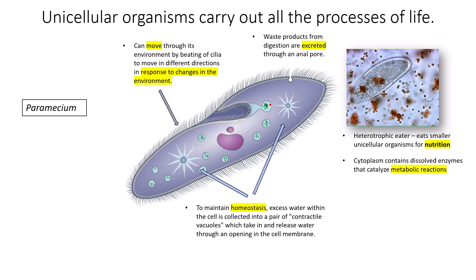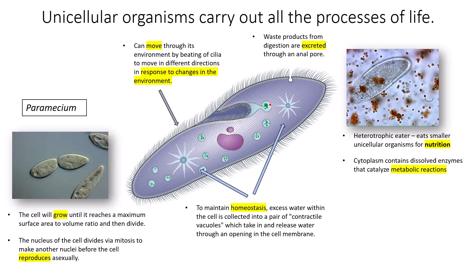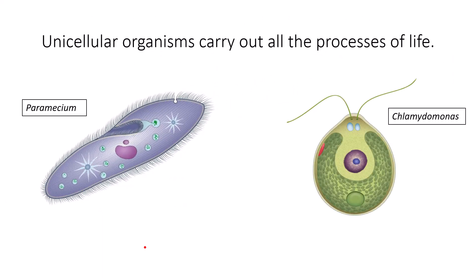The paramecium can move through its environment by beating of cilia in different directions in response to changes in its environment — demonstrating both movement and response to stimuli. The paramecium will grow until it reaches a maximum surface area to volume ratio, then divide. The nucleus divides via mitosis to produce another nucleus before the cell reproduces asexually. It therefore demonstrates growth and reproduction. All of these are life processes seen in all living things, including this paramecium.